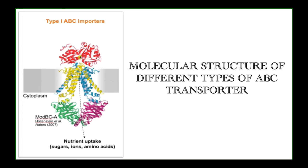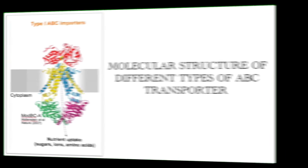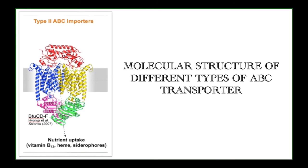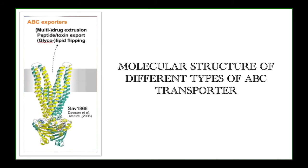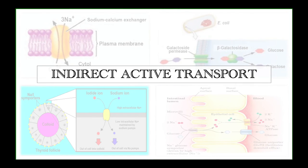There are three types of ABC transporters. Type 1 is the ABC importer involved in transport of sugars, ions, and amino acids in plants and animals. Type 2 is somewhat cylindrical, also an ABC importer, helping transport vitamins and siderophores, particularly for iron transport. The third type uniquely allows only the export of ions from inside to outside. Due to this compact nature, the ATP-binding cassette is a unique type of membrane transporter in plant systems.